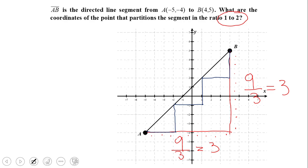Now the problem is asking you to find the coordinates of the point that partitions the segment into the ratio 1 to 2. So here you go, you have the 3 congruent segments. And starting at point A, the x-coordinate of the point P is negative 2. The y-coordinate of point P is negative 1.